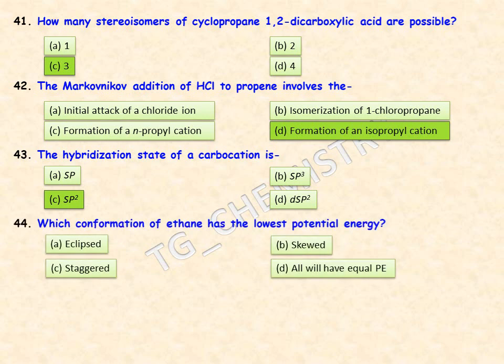Which conformation of ethane has the lowest potential energy? There are different conformations — staggered, eclipsed, and skewed. For the staggered conformation, the lowest potential energy arises, especially for ethane. So option C — staggered — is the right answer.